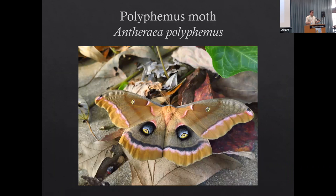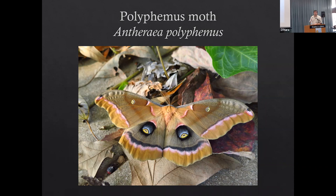Let's look at some of our moths together. Remember the difference between a boy and a girl - the boys have antennae with a lot of filaments on them, so kind of feathery antennae. Is this a boy or a girl? The room got it exactly right - this is a boy moth with all of the filaments on their antenna. This is a boy Polyphemus moth. It uses all of those extra little sections of the antenna to smell the pheromones of the female.